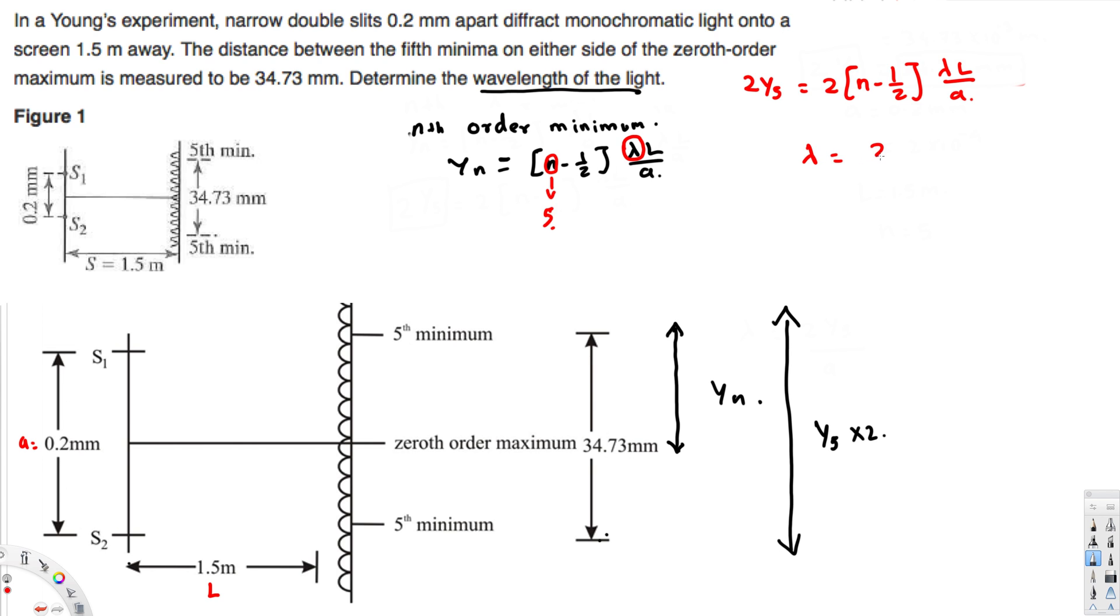Okay, so we are trying to find lambda, so let's go ahead and rearrange this equation. Lambda is going to be equal to 2y5 times a divided by lambda L.